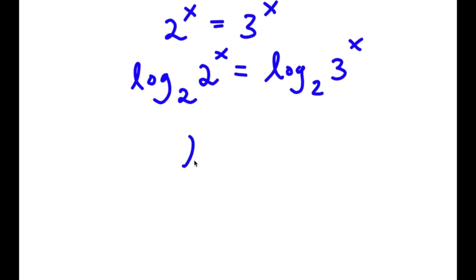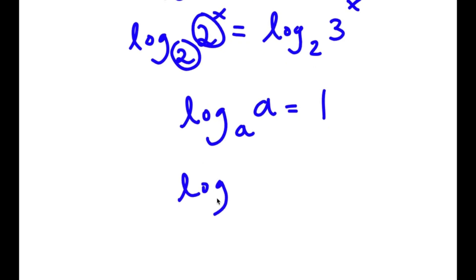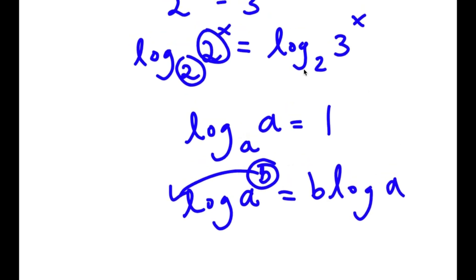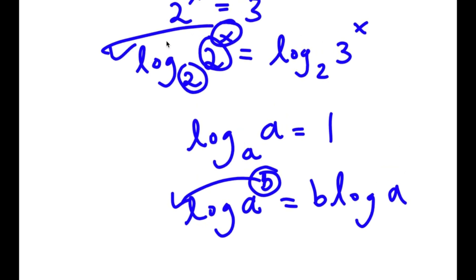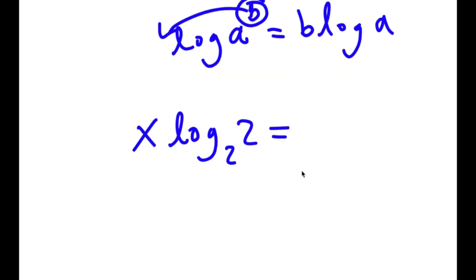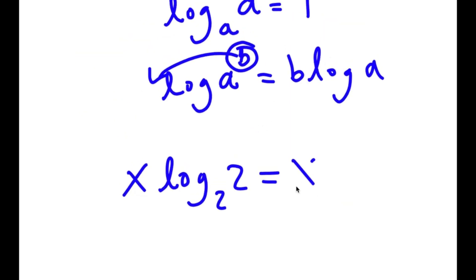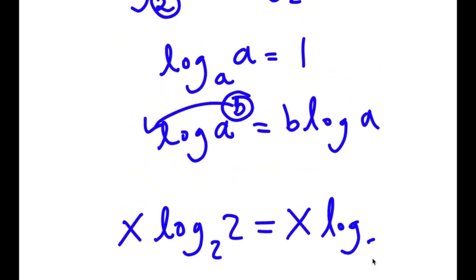Now, if I have something in the form log base a of a, this is simply equal to 1. Also, if I have something in the form log base a of b to the power of b, I can move this exponent b to the front, so it equals b times log a. So in this case, x is my exponent, and I can move it to the front. So now I have x times log base 2 of 2 is equal to x times log base 2 of 3.